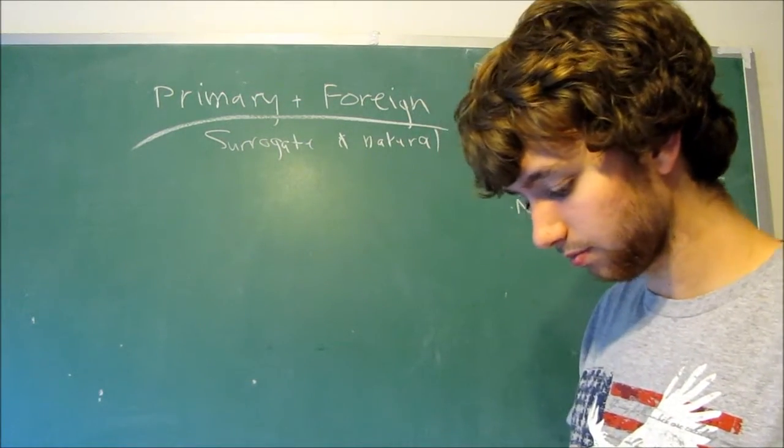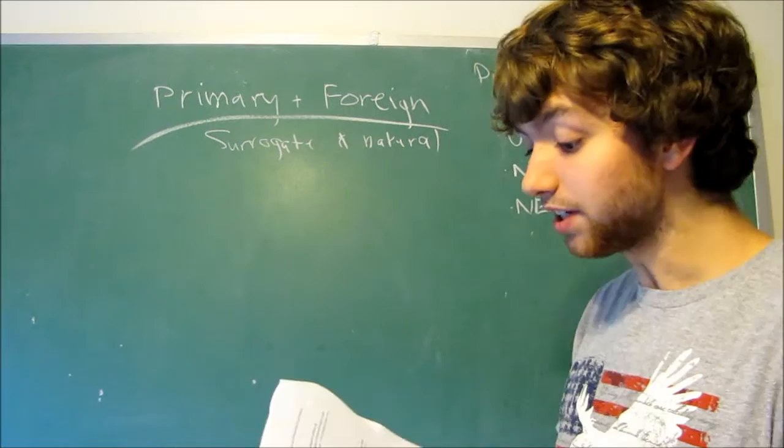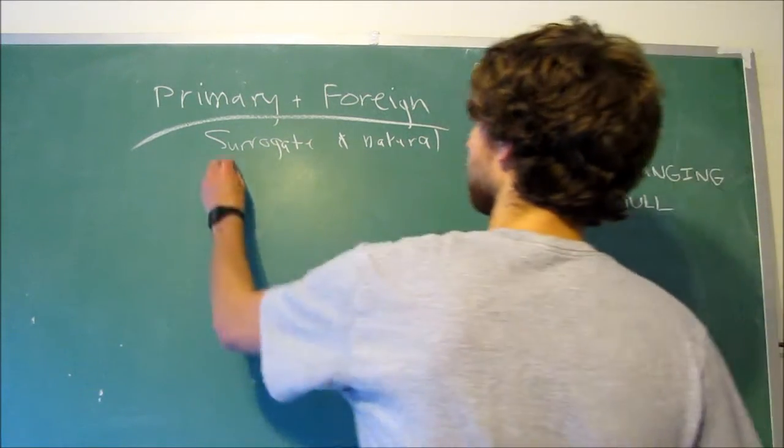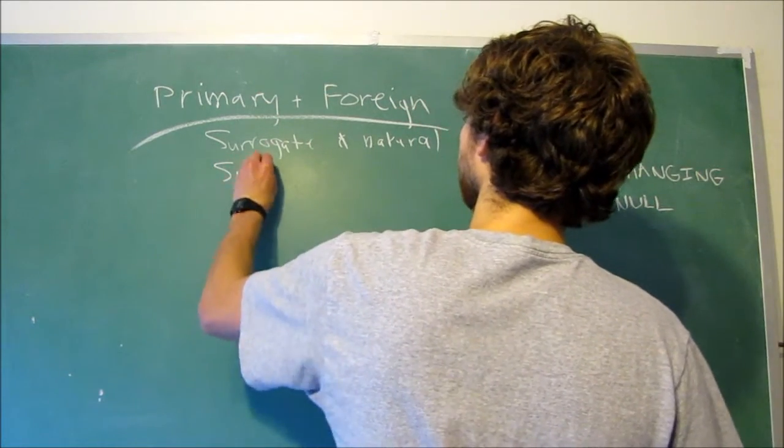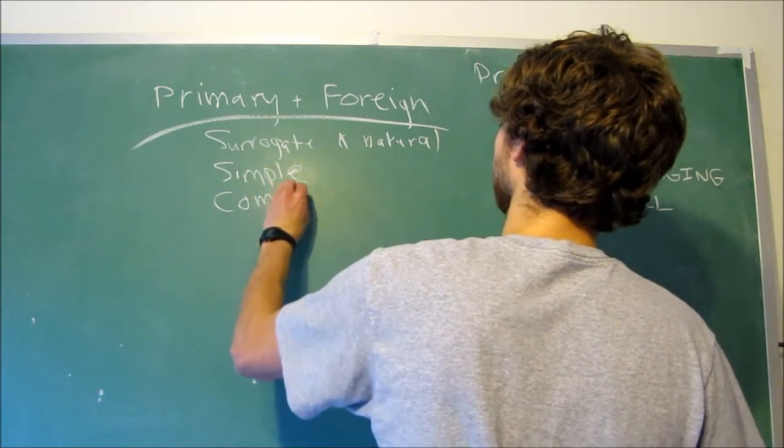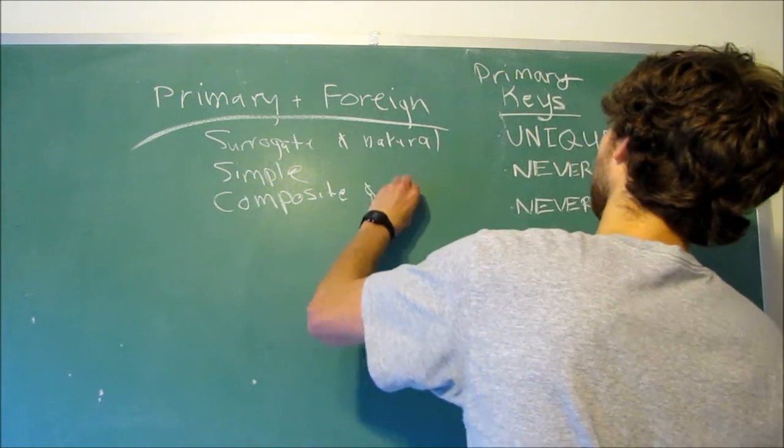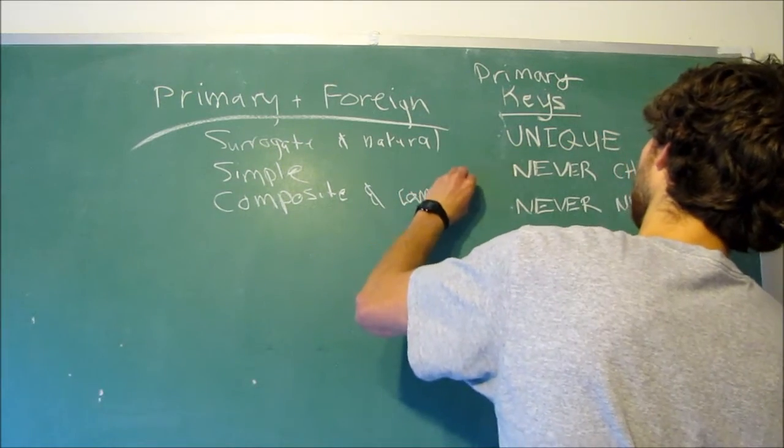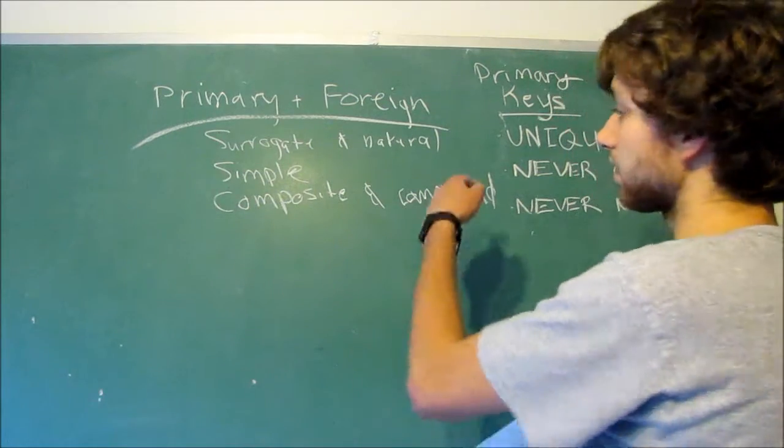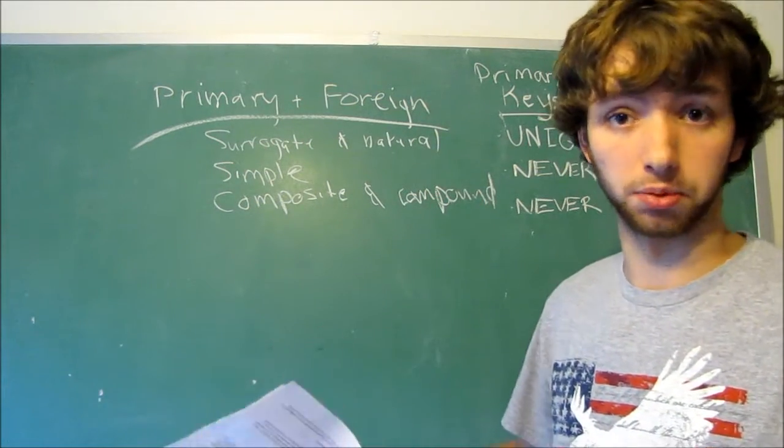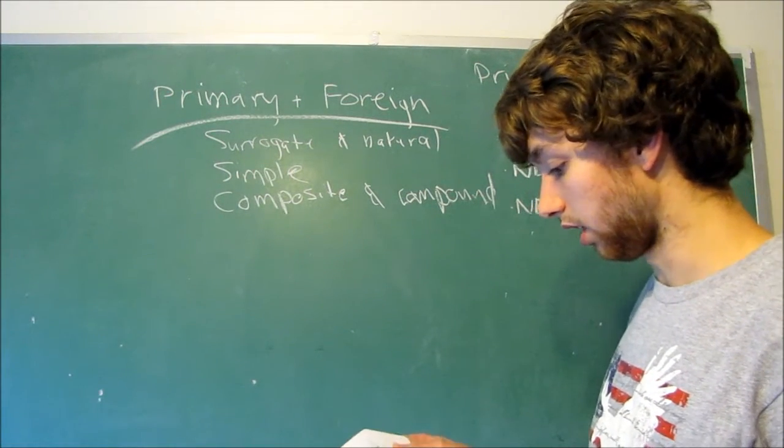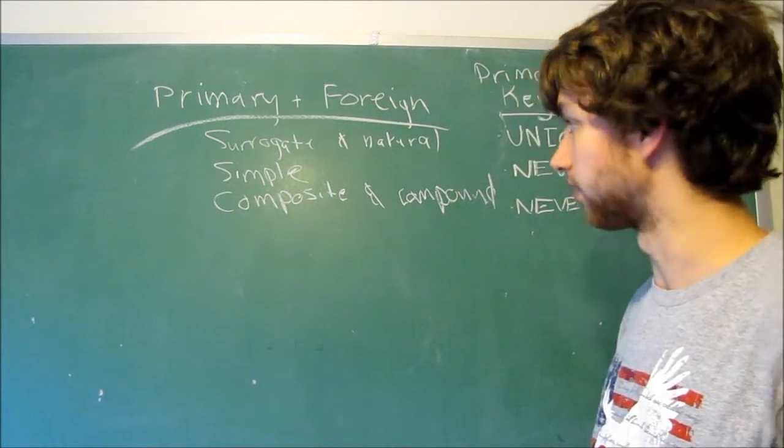Alright. Speaking of simple, we'll talk about the simple key. Alright. So we got simple. We got composite. And compound. Okay, so simple is basically a one-column key. Composite and compound are multiple-column keys. We talked about those in the previous video, I believe. Yeah. So that's pretty much all the categories of keys.